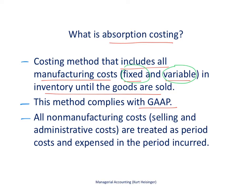All non-manufacturing costs — things like selling costs, administrative costs, and marketing costs to promote our products — are treated as period costs. Those costs are expensed in the period in which they are incurred. They do not go into inventory, but they appear on the income statement as an expense.